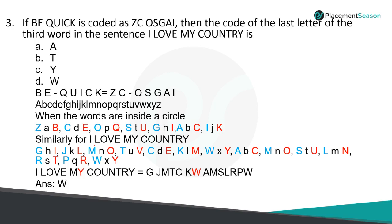There can also be a sentence given and based on that they ask you to do the coding. The next question: if BE QUICK is coded as ZCOSGAI, then what is the code of the last letter of the third word in the sentence 'I LOVE MY COUNTRY'? First, the third word is MY and the last letter of the third word is Y. So you have to find what Y can be coded as, by comparing BE QUICK and ZCOSGAI to find a conclusion.